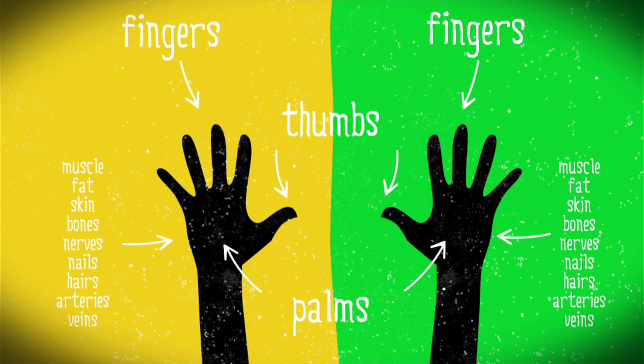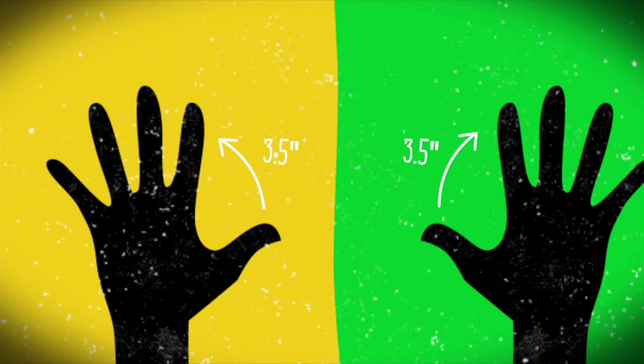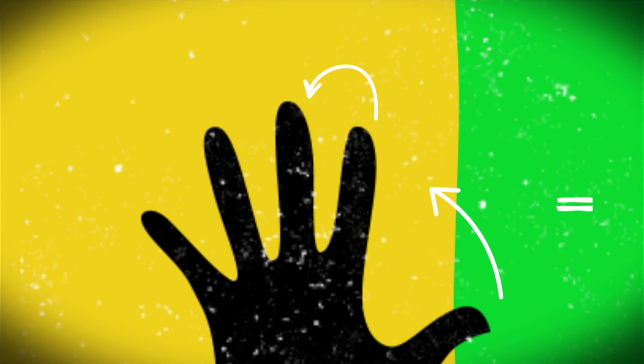Like our two molecules under study, both of your hands are made of the same stuff. Furthermore, the distances between stuff in both of your hands are the same. The index finger is next to the middle finger, which is next to the ring finger, etc.